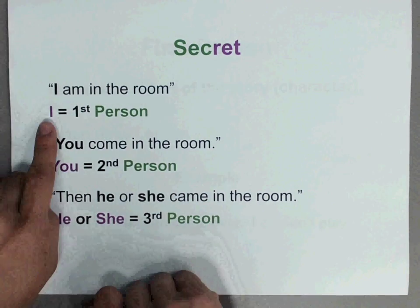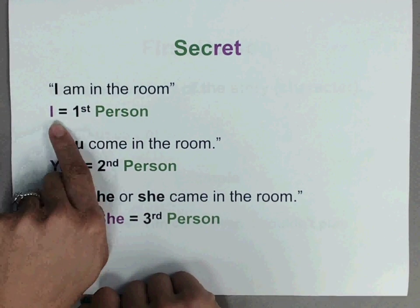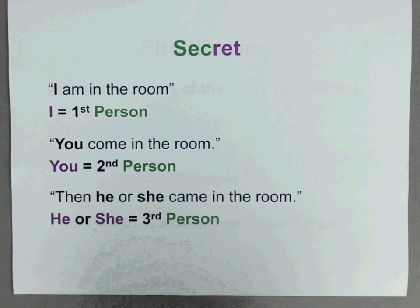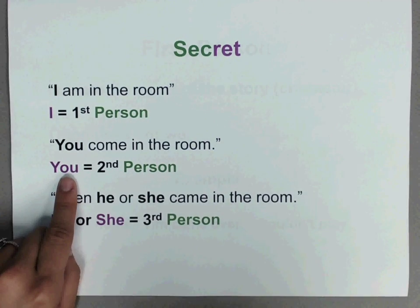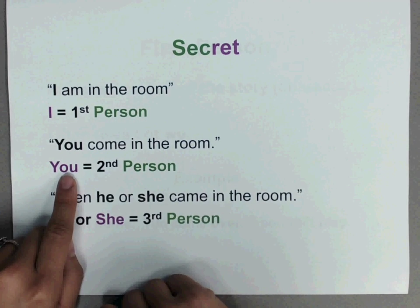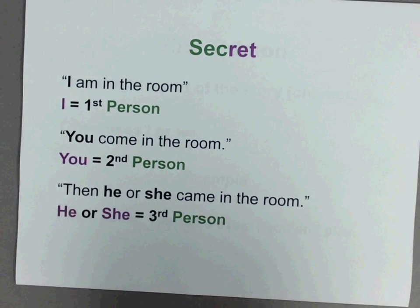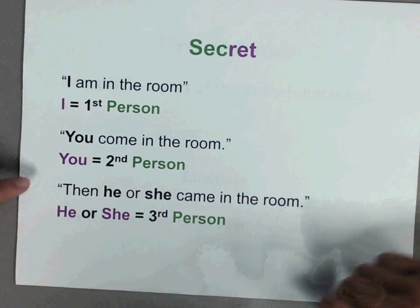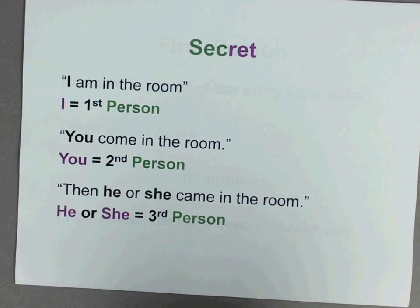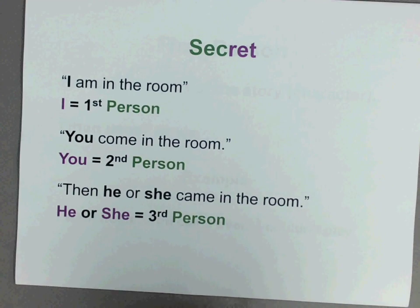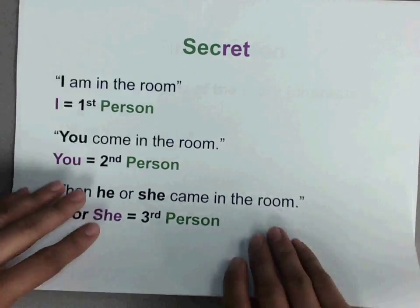"I am in the room." I is our pronoun, so that means that's first person. "You come in the room." You is our pronoun, so it's second person. "Then he or she came in the room." He or she is our pronoun, and those equal third person.